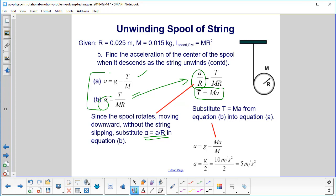Now we take that value and we substitute T equals MA into equation A. So we have A is equal to G minus MA over M. We cancel out the M's. We find that A is equal to G over 2. And here you can see we're using 10 meters per second squared for G. 9.8 of course is more accurate, but for the AP-C exam, you're allowed to use 10. And so we get an acceleration of 5 meters per second squared.